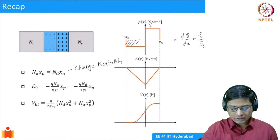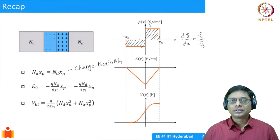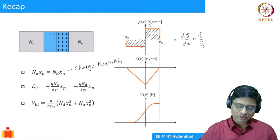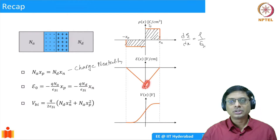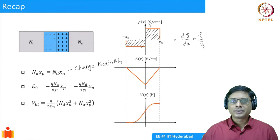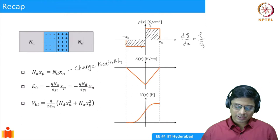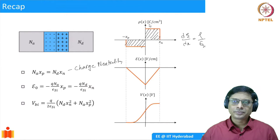We also derived expressions for electric field and potential. I would like you not to memorize these expressions but remember how they are derived. Once you know that dE/dx is proportional to charge density, you can immediately integrate and know it's a linear function — why it is in the negative direction, why there is a peak at x equals zero. Understand it intuitively and the math automatically falls into place, otherwise you'll memorize equations and risk making mistakes. We also derived an expression for built-in potential in quadratic form.